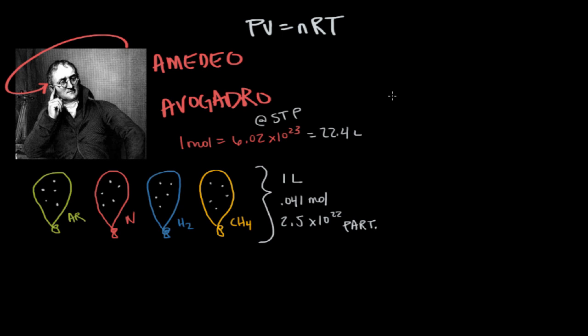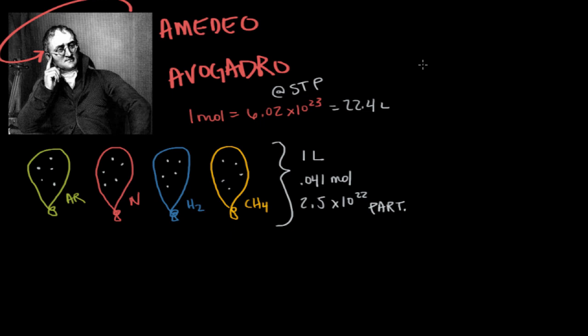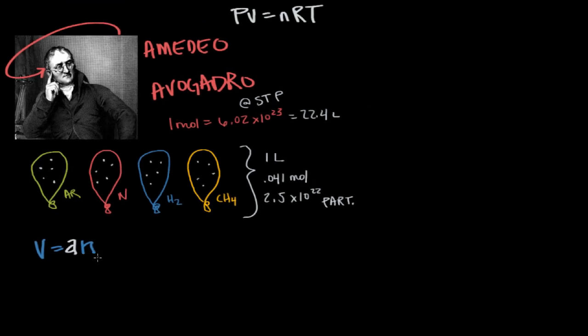Avogadro used this idea and some intuition to develop his law, which is V is equal to A, a constant A, times the number of moles. This means that the moles of gas in the system varies directly with the volume, or the quotient of V and N is equal to a constant.